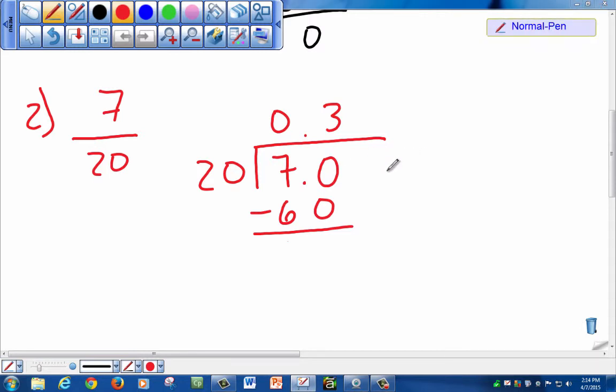So now we subtract 70 minus 60, 0 minus 0, and 7 minus 6, which is 1. We have a remainder of 10. We can add another 0. We bring down our 0. Now it's 100.